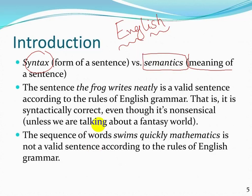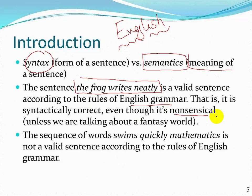For example, the sentence 'the frog writes neatly' is a valid sentence according to the rules of English grammar — the sentence is written in the right way. It is syntactically correct even if it is non-sensible. Whether it is sensible or true, we will not evaluate that; we only check if it follows the rules of English. The sentence 'swing quickly mathematics' is not a valid sentence according to the rules of English grammar.